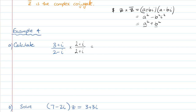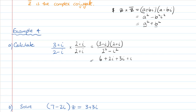Now we just multiply these fractions and simplify. The numerator will take a bit longer. We have 3 plus i times 2 plus i. I've made the choice to use 2 plus i because it will give me the difference of two squares on the denominator: 2 squared minus i squared. On top: 3 times 2 is 6, plus 2i, plus 3i, plus i squared.